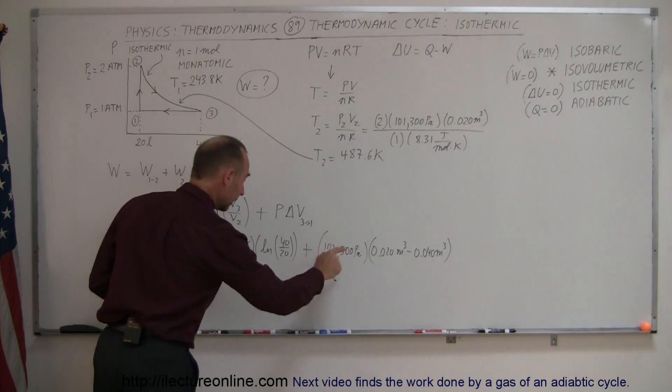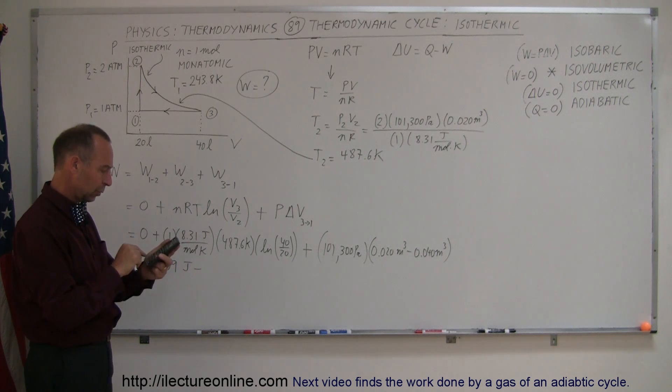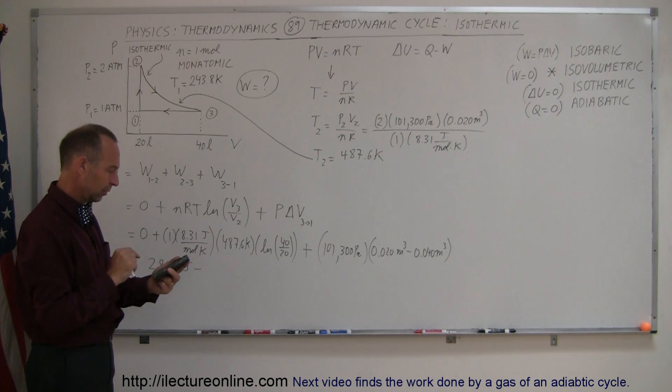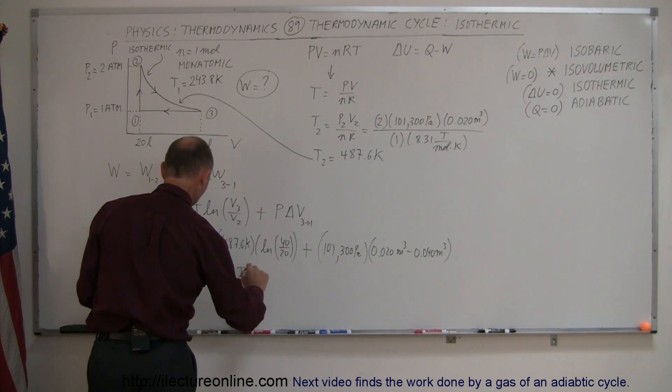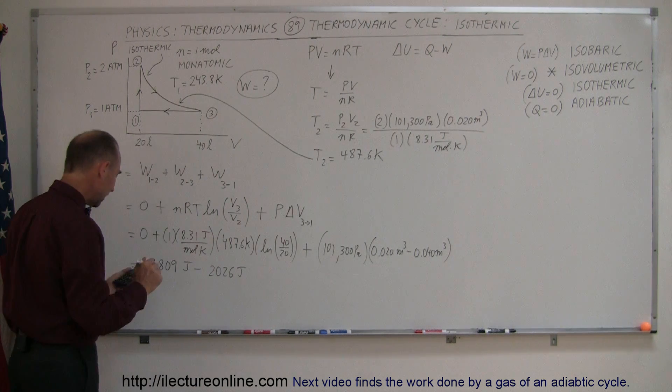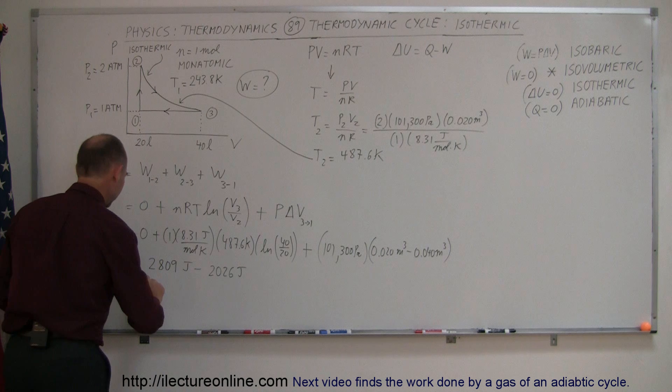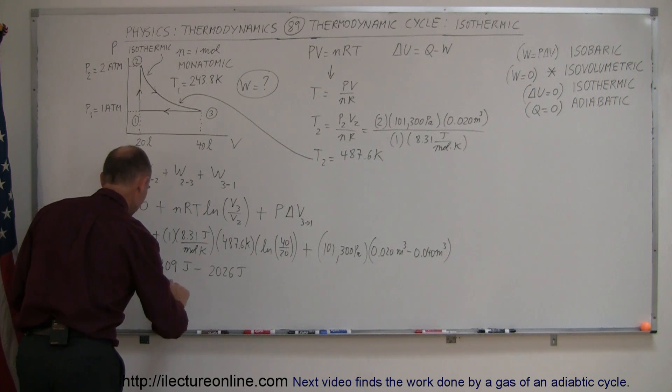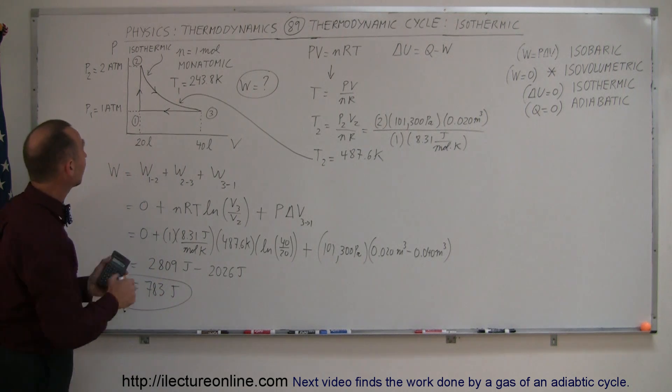And then that will be a minus, that's going to be negative quantity, 0.02 times 101,300 equals, that's 2,026 joules, negative work, and so the net amount of work we do there is 809 minus 26 equals 783 joules. That's the net work done in this particular cycle, and it makes sense.